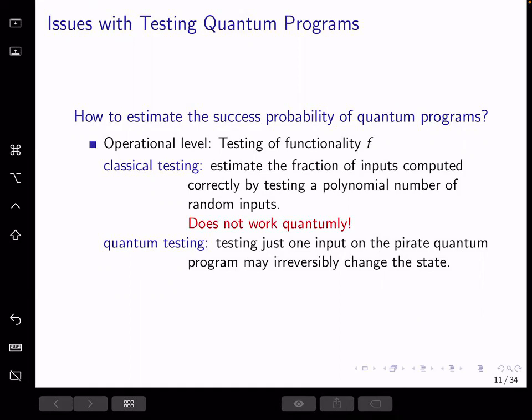However, in the quantum setting, when the challenger only gets a single copy of the program, each evaluation may alter the pirate program irreversibly because we cannot assume we can do gentle measurement to the pirate programs like we do to the honestly generated programs. Estimating the fraction of inputs on these pirate programs that compute correctly is not generally possible.